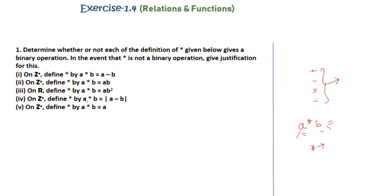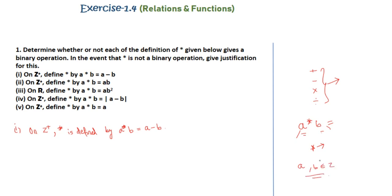Starting with Question 1, part one: on z+ we define star by a★b = a − b. Z+ is the set of all non-negative integers. Now, clearly if we take a and b belonging to z+, suppose a = 2 and b = 3 such that a is less than b, then a★b gives us a − b, which is 2 − 3 = −1, and −1 is not in z+.